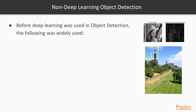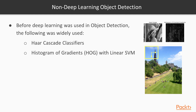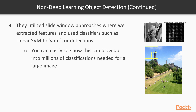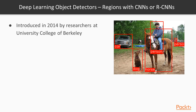Non-learning methods of object detection included Haar cascade classifiers and histogram of gradients (HOG) with linear SVMs. These are now pretty much outdated because deep learning object detectors are significantly better. The main limitation of these older approaches is a technique called sliding windows, where you slide a window at various scales across the image, making it inefficient — especially for multiple object classes.